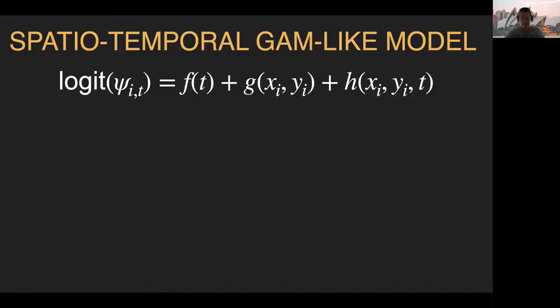This function f is possibly non-linear. We have a function g of space x and y, possibly non-linear, like in the work by Rushing. And we add an interaction of time and space through function h, possibly non-linear too.